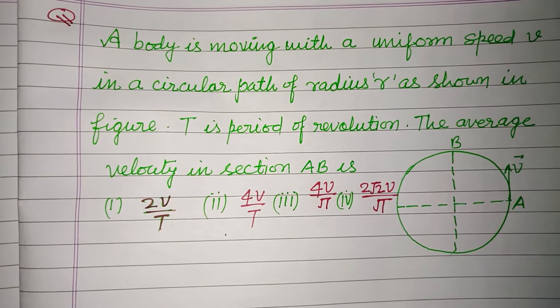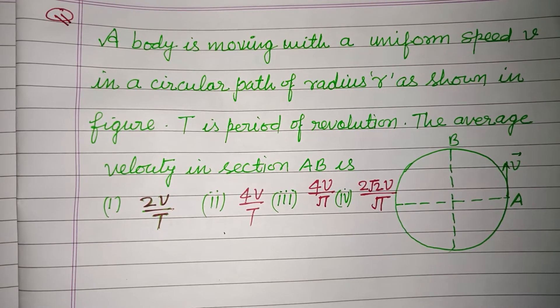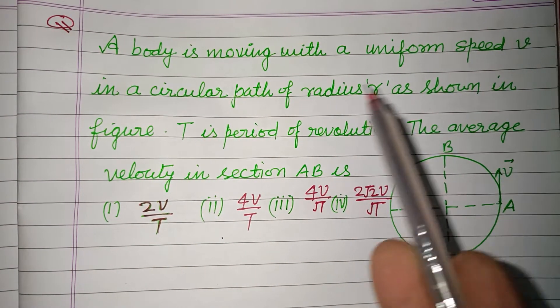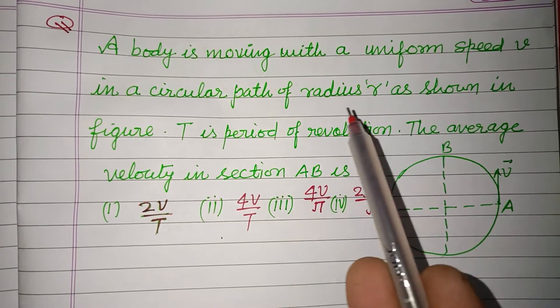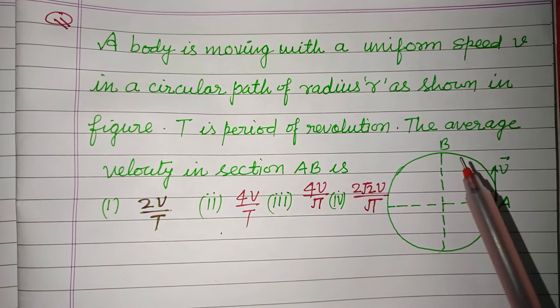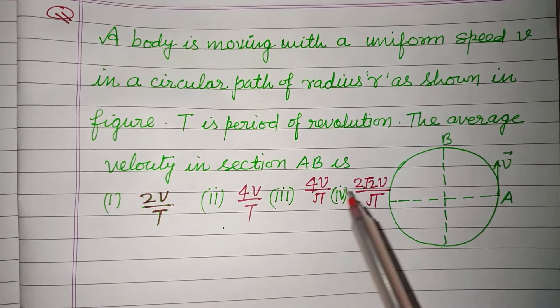Hello viewers, warm welcome to this YouTube channel. The question is: a body is moving with a uniform speed V in a circular path of radius R as shown in figure. T is period of revolution. Find the average velocity in section AB.